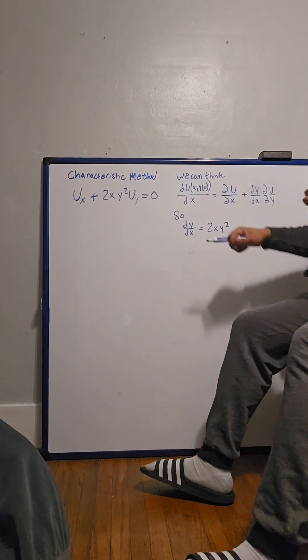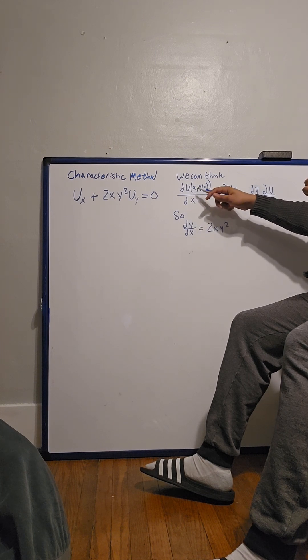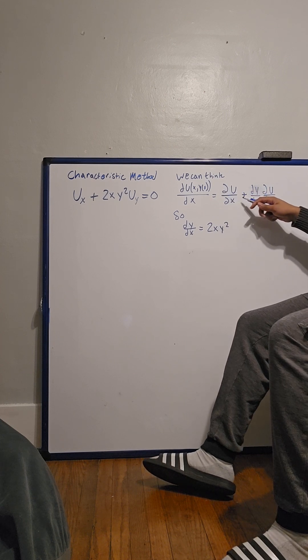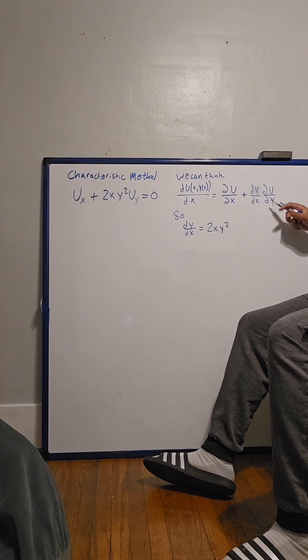Now we can think of this as du of xy dx equals partial u with respect to x plus dy dx partial u with respect to y.